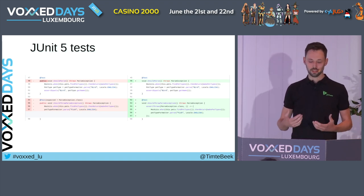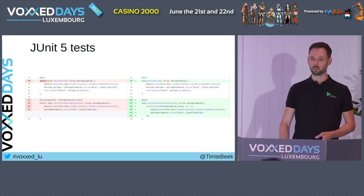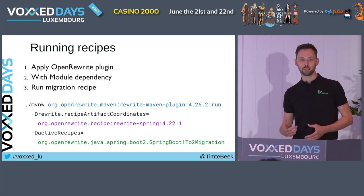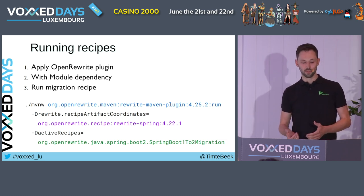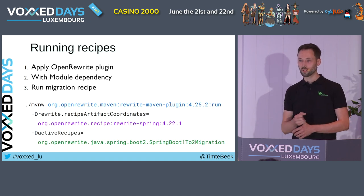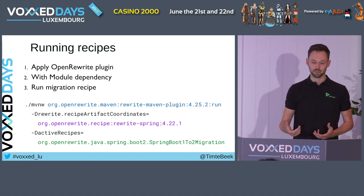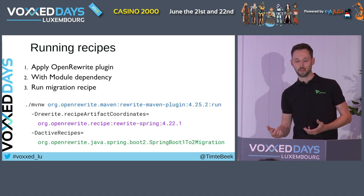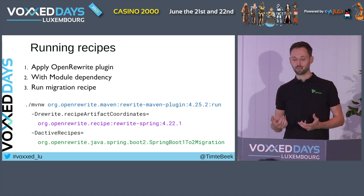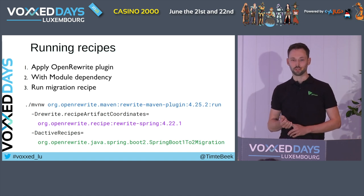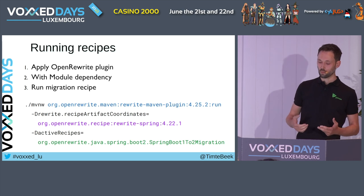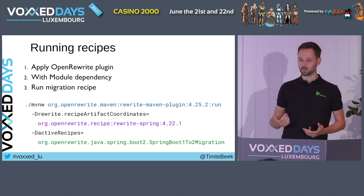And it's just a small sample of the types of transformations that are possible. Running migration recipes is fairly straightforward. First, you apply a build tool plugin for Open Rewrite — I've used Maven in my examples, but Gradle works just as well. Then, depending on the changes you want to make, add a dependency on the respective Open Rewrite module. And lastly, run the Open Rewrite plugin with the migration recipe that you want to execute.